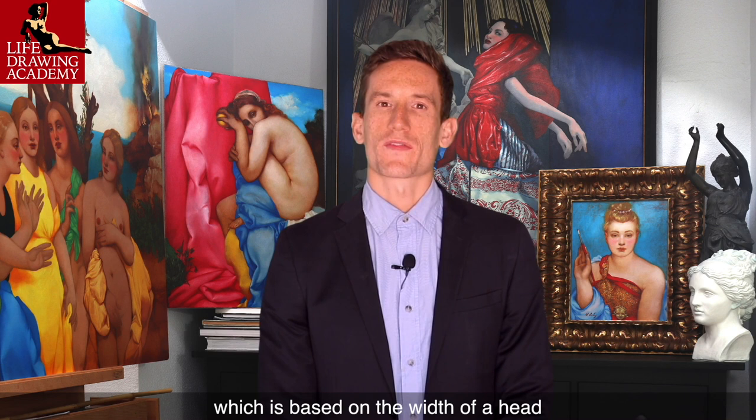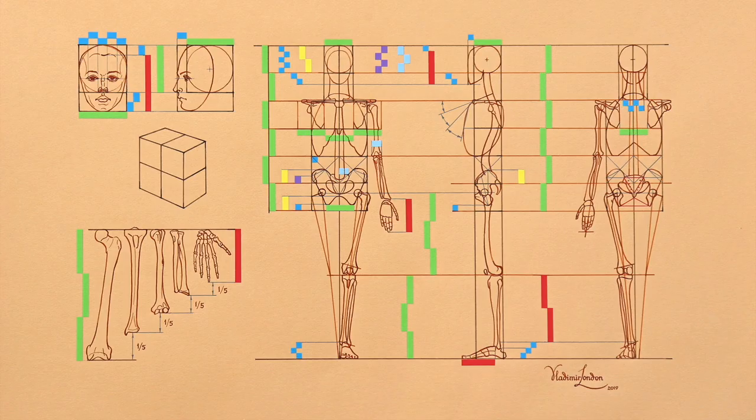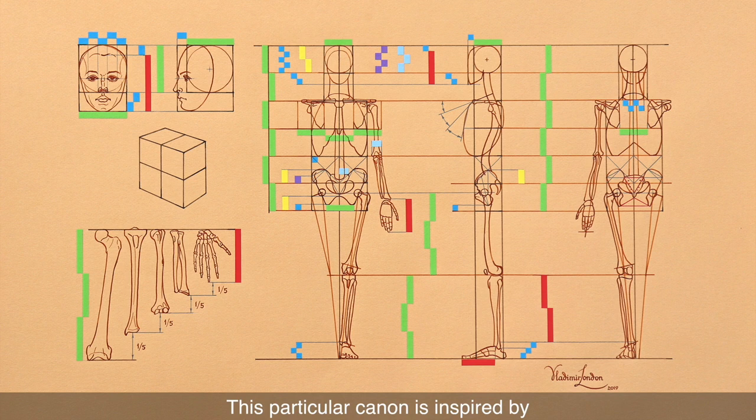In this video, you will discover one of the canons of human body proportions, which is based on the width of a head as the main measuring unit. This particular canon is inspired by Robert Beverly Hale, an American artist and instructor of artistic anatomy.